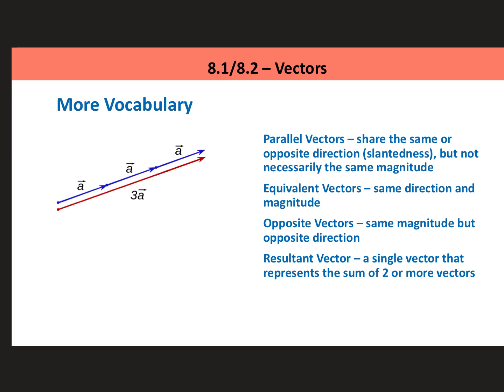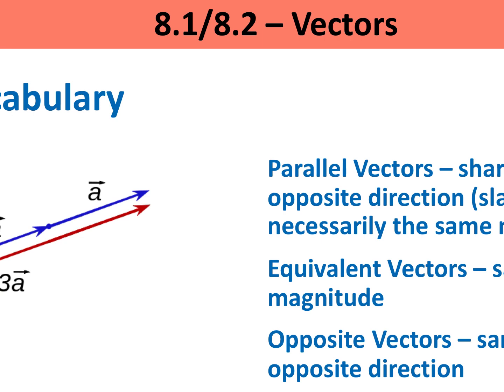They're parallel lines, but they're not necessarily the same magnitude. For example, you could have like these two vectors are parallel vectors, even though they're not the same length. They don't even have to be going in the same direction. Just as long as they have the same slantedness, they are parallel vectors.